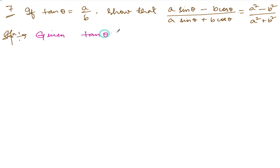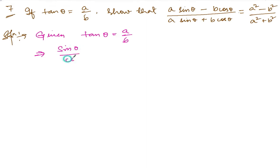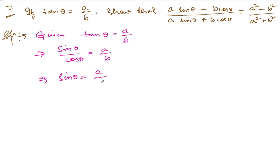Given: tan θ is equal to a by b. Now, tan θ can be written as sin θ divided by cos θ, which equals a divided by b. Transferring cos θ to the other side, we get sin θ is equal to (a/b) into cos θ. This is equation number one.